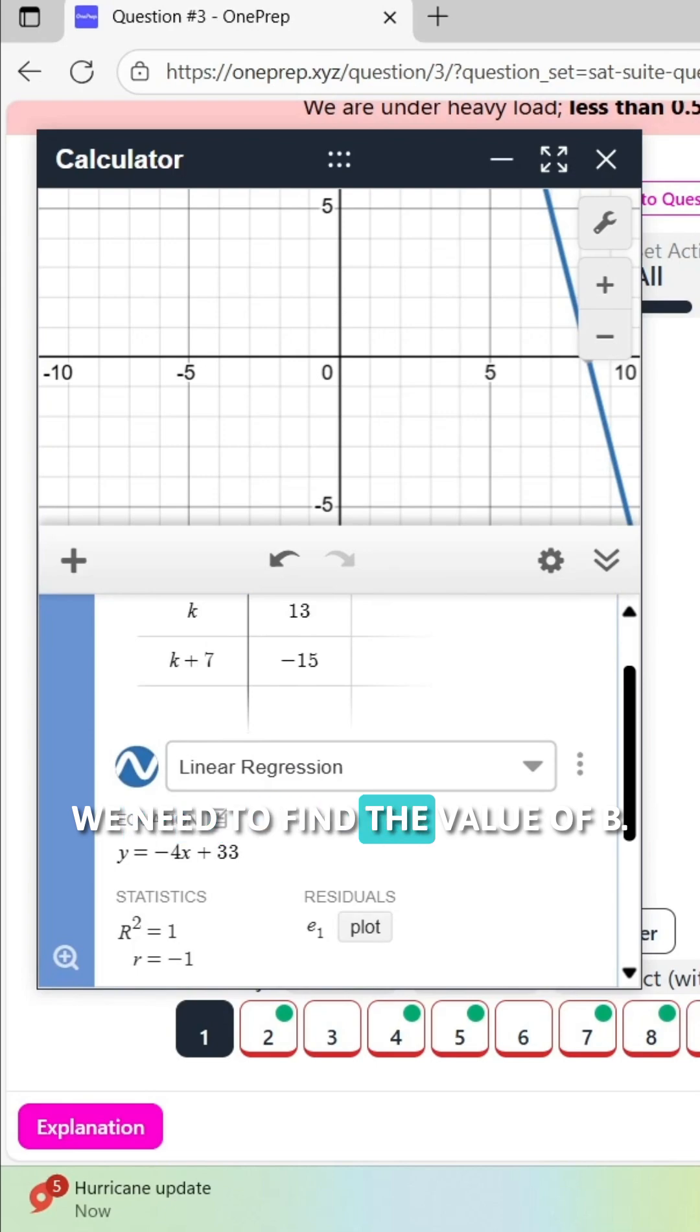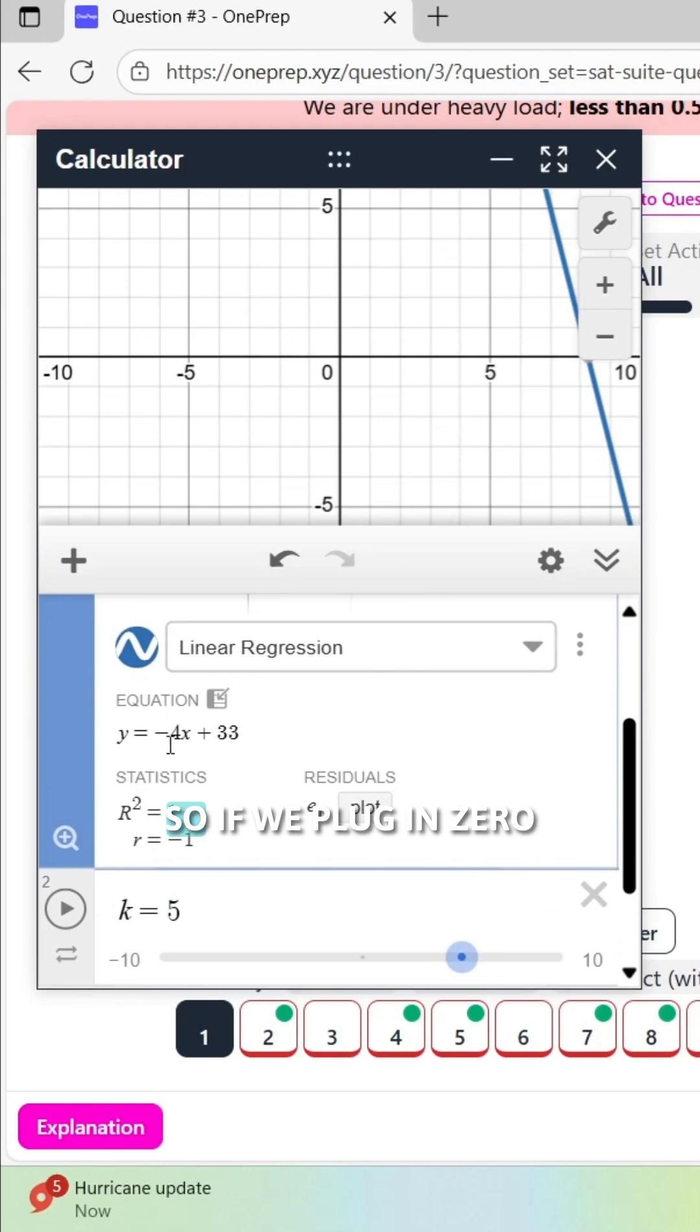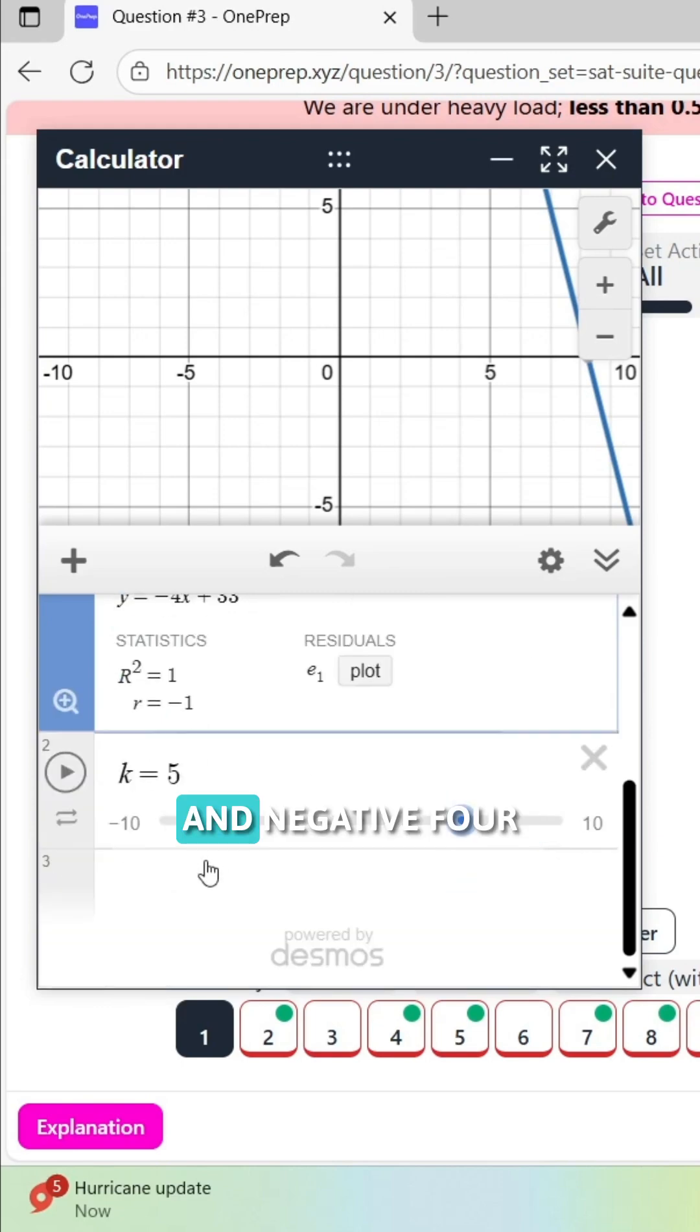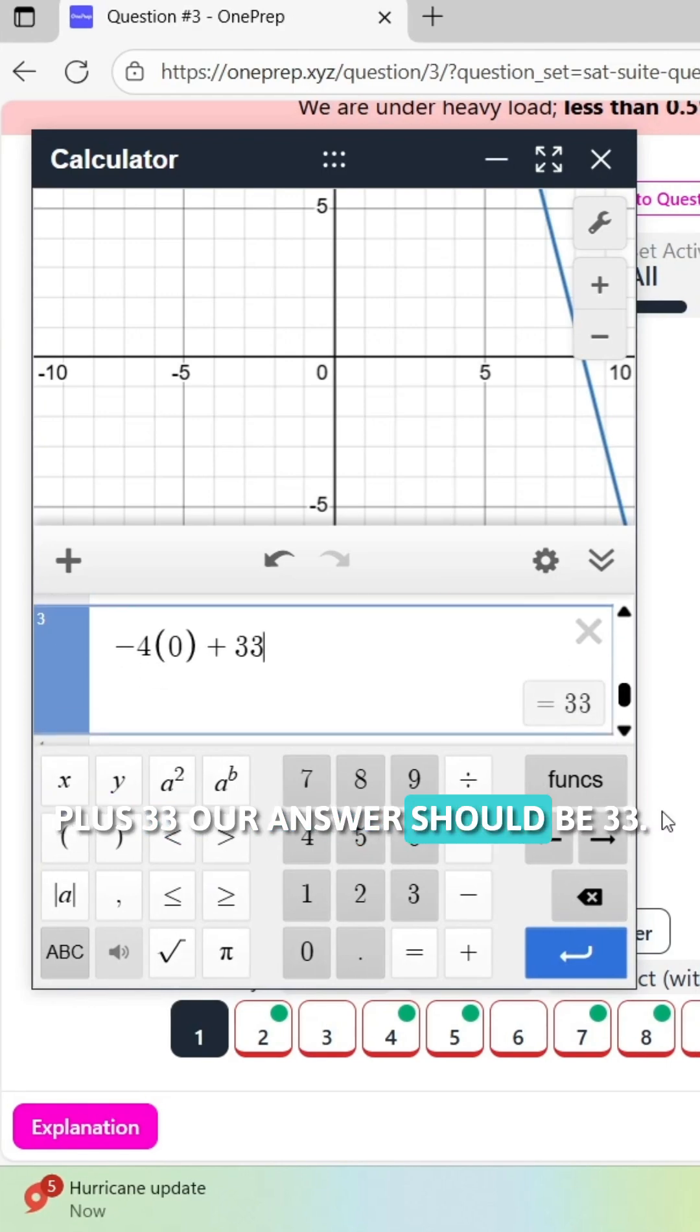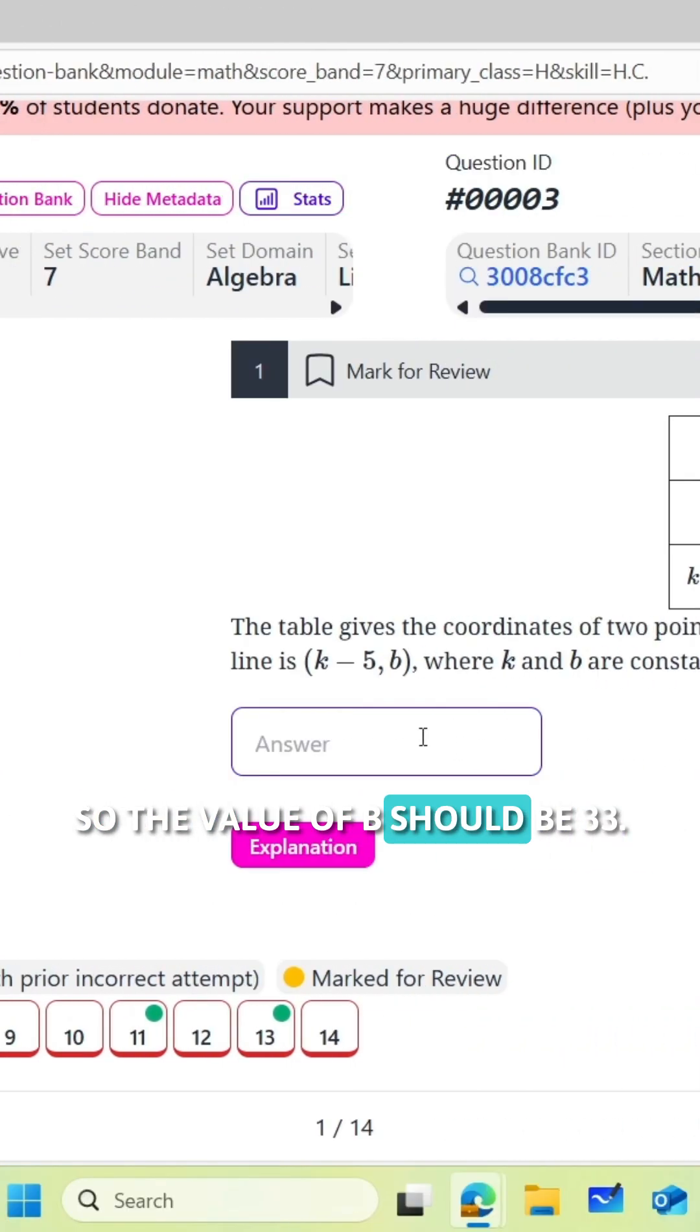Now we need to find the value of b, and that's simply when x is equal to 0. So if we plug in 0 and negative 4 equals 33, our answer should be 33. So the value of b should be 33.